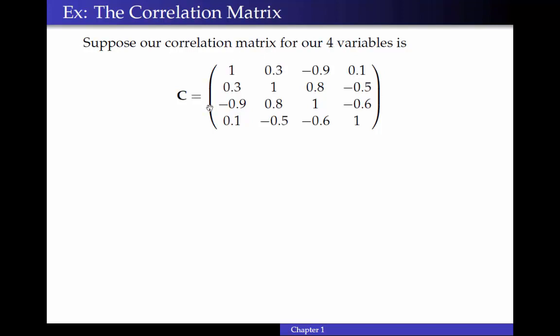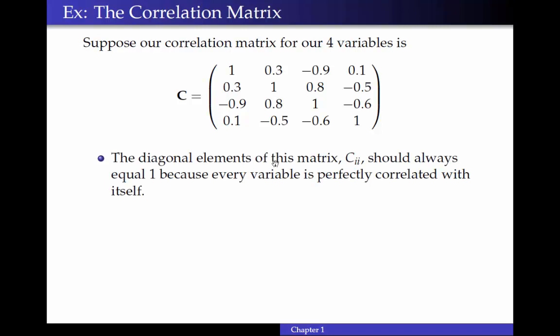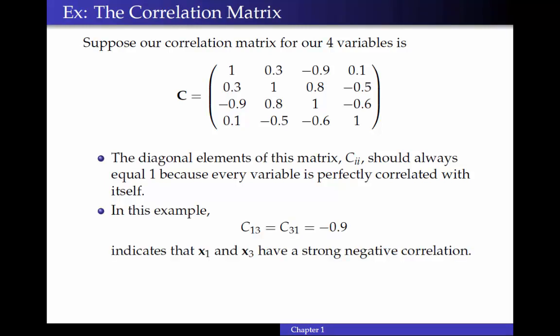So suppose we have a correlation matrix for the four variables that looks like this. The diagonal elements of this matrix, the CII, for the ith row, ith column, should always equal one because every variable is going to be perfectly correlated with itself. And then in this example, I also have that the three, one entry, which is equal to the one, three entry, is equal to negative point nine. And that would indicate that x1 and x3 have a strong negative correlation.